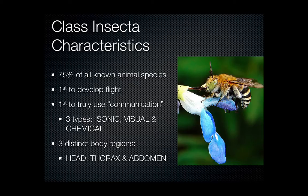An interesting thing is that insects are the first animal group to develop flight. When we examine species from the fossil record, this is the first group we've observed that actually has wings and can fly.